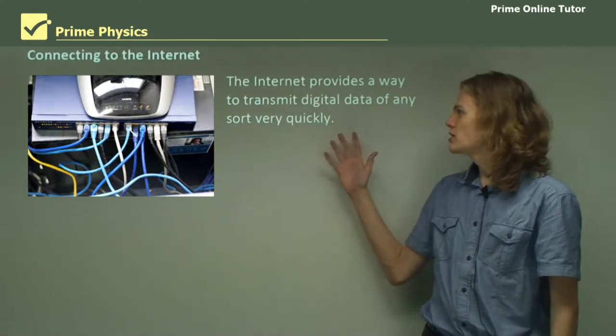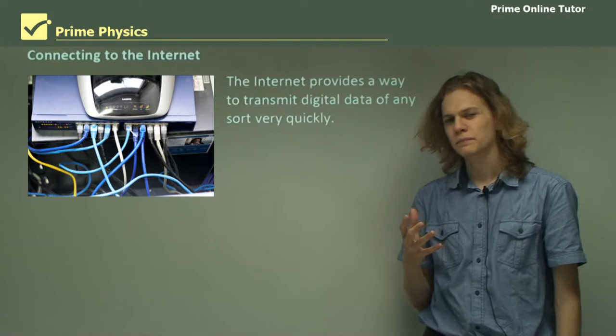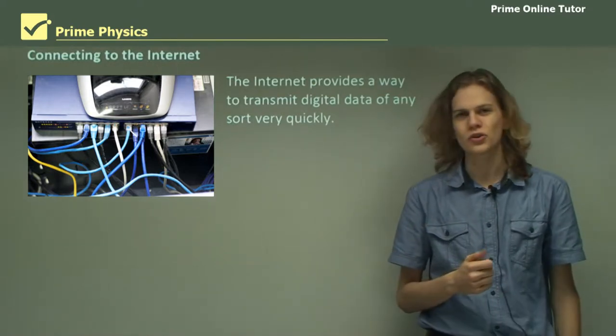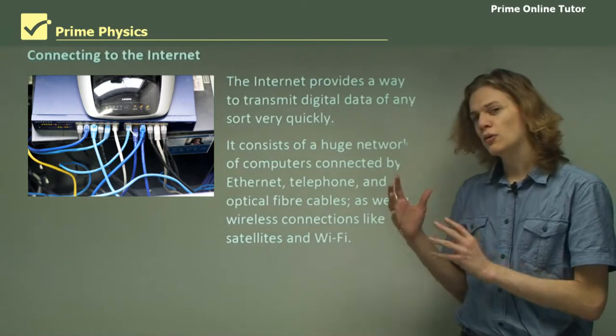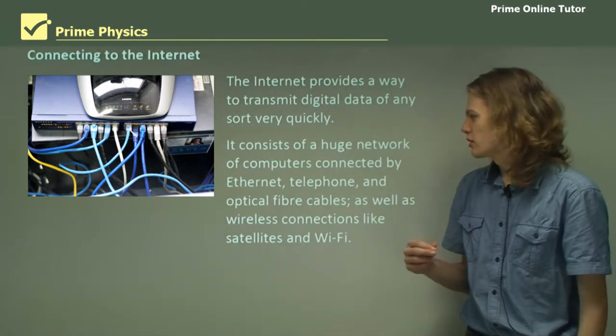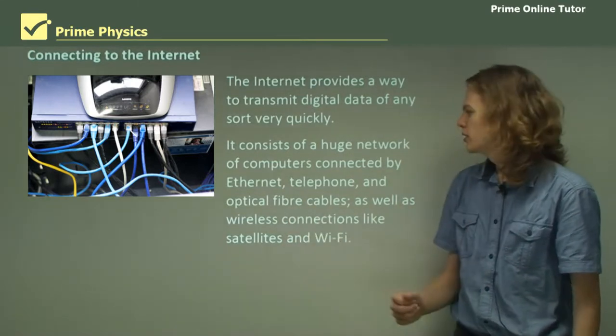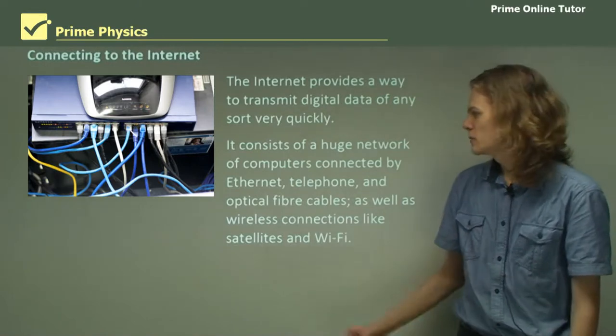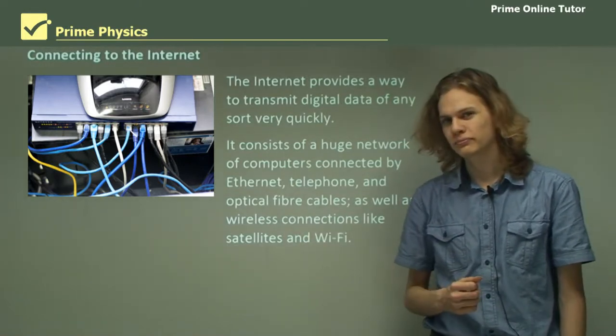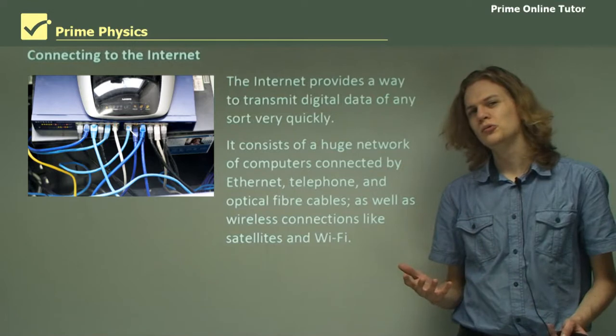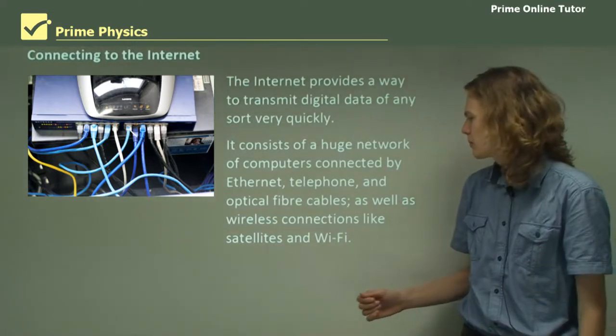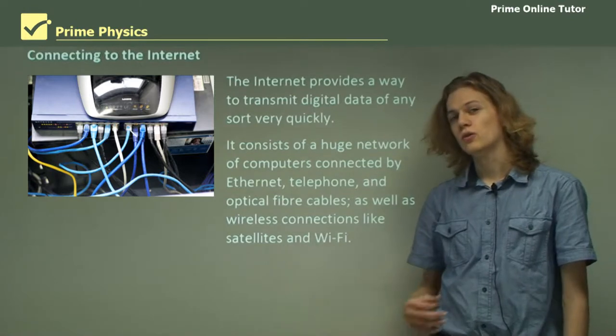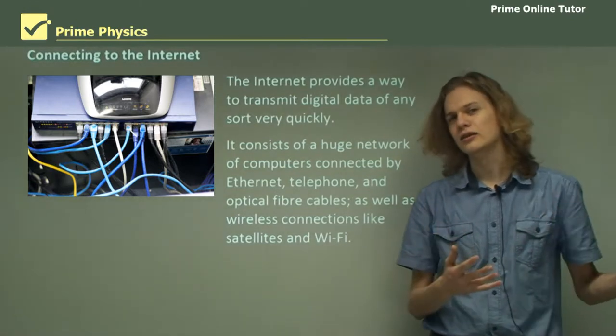The internet provides a way of transmitting digital data very quickly all over the world using the telephone communications. We have a huge network of computers connected by things like ethernet cables, telephone wires and optical fiber cables, which of course we learned about when we were talking about total internal reflection. We can also use things like wireless communications to get things like satellite links.